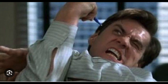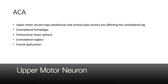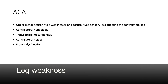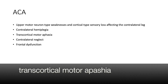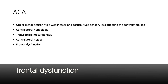To remember the deficits associated with ACA strokes, think of the Affordable Care Act, also abbreviated ACA. This act provides medical care for upper-class people — upper motor neuron — people who feel weak in the legs from years of not having health care — cortical-type sensory loss affecting the leg. Trans people — transcortical motor aphasia — and sometimes other people who feel unseen or neglected — contralateral neglect. Sometimes even aliens get health care coverage — alien hand syndrome — because our government isn't that organized — frontal lobe dysfunction — and doesn't always have the best judgment.